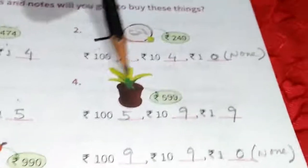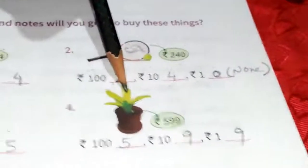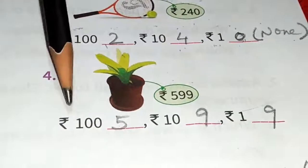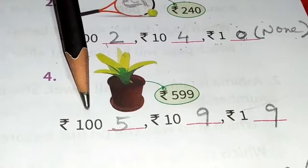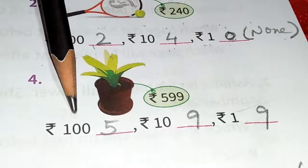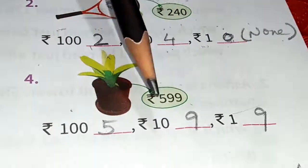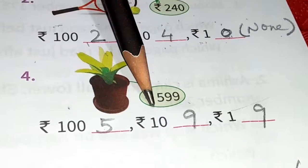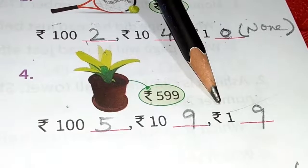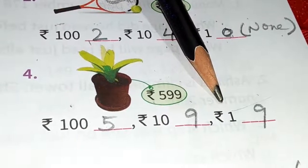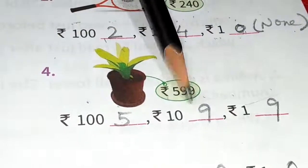Number 4: this flower vase costs rupees 599. How many 100 rupee notes will we give? 5 hundred-rupee notes. And 9 ten-rupee notes — that makes 90. And 9 one-rupee coins. So that makes 599.